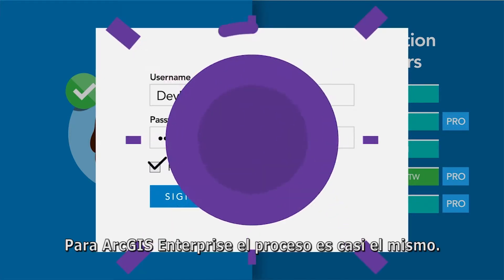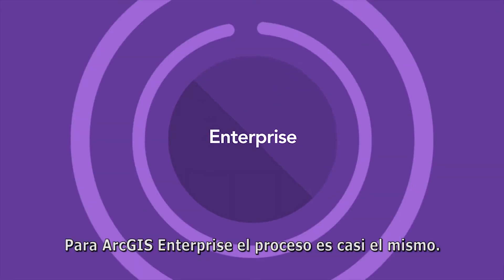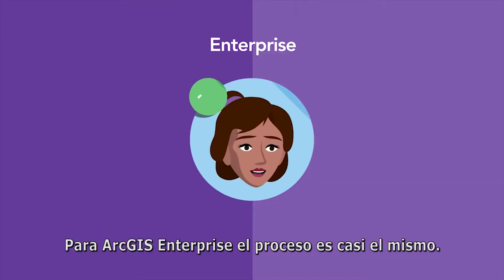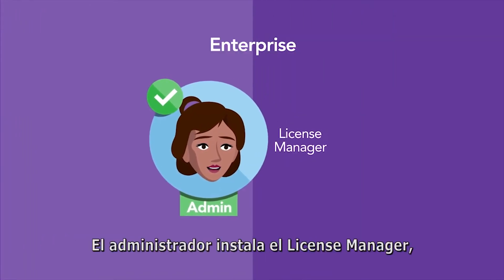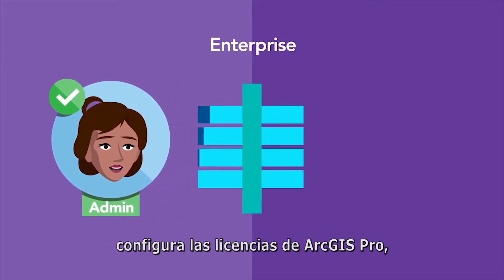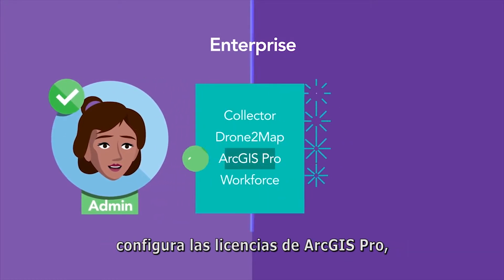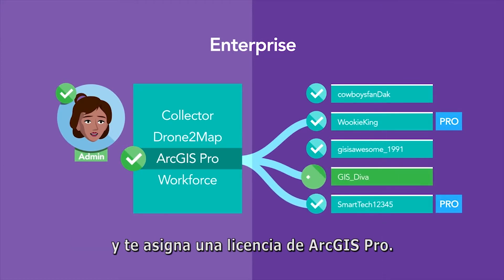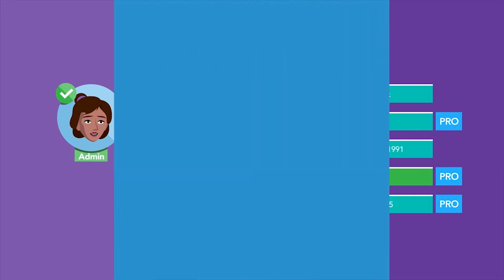For ArcGIS Enterprise, the process is almost the same. The admin installs License Manager, configures ArcGIS Pro licensing, then adds you as a member to the organization and assigns you an ArcGIS Pro license.